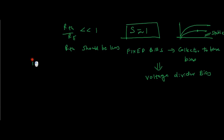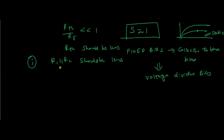To keep the ratio RTH/RE less than 1, RTH — which is R1 in parallel with R2 — should be small. It means you need to choose smaller values for R1 and R2. For example, if you use 10K and 10K, the parallel combination is 5K. Using 10 ohm values makes the parallel combination even less.